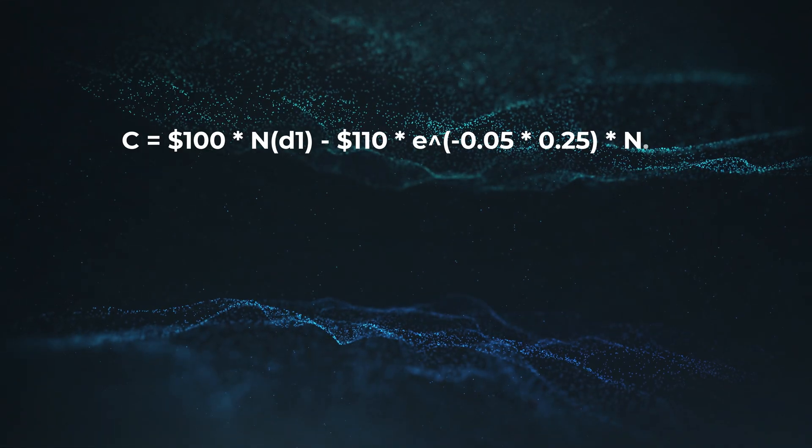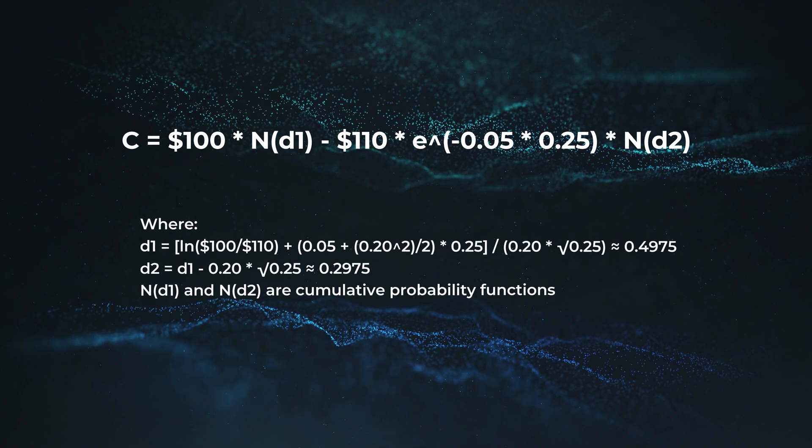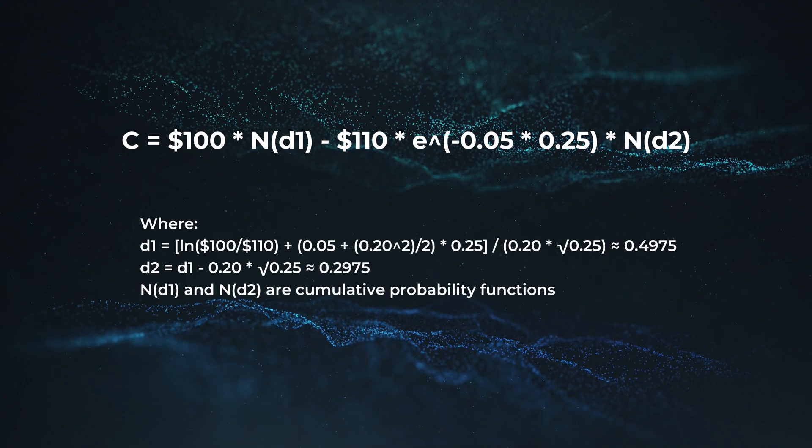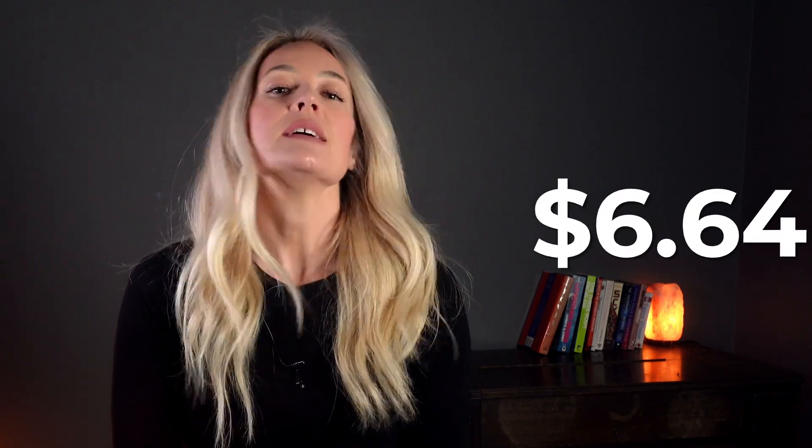Plugging the values into the formula, you get this. Where N(D1) and N(D2) are cumulative probability functions. After calculating, you find that the theoretical value of the call option is approximately $6.64. This means that according to the Black-Scholes model, the fair market price of this option should be around $6.64.